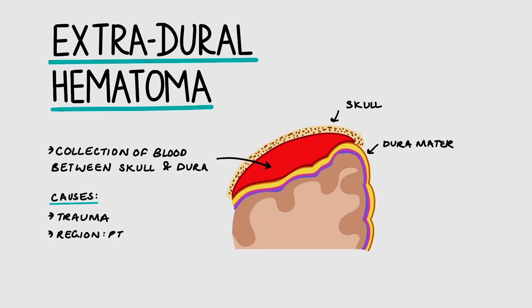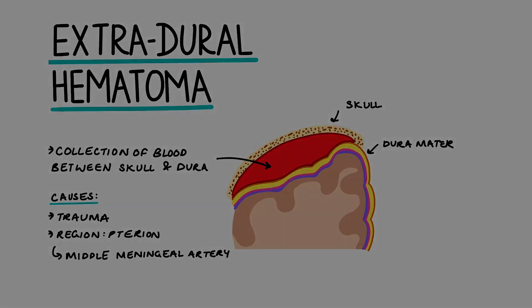It often occurs in the weakest part of the skull, known as the pterion, as this area is very thin. Here we have the middle meningeal artery, so often this is the artery that's damaged during an extra-dural hematoma.